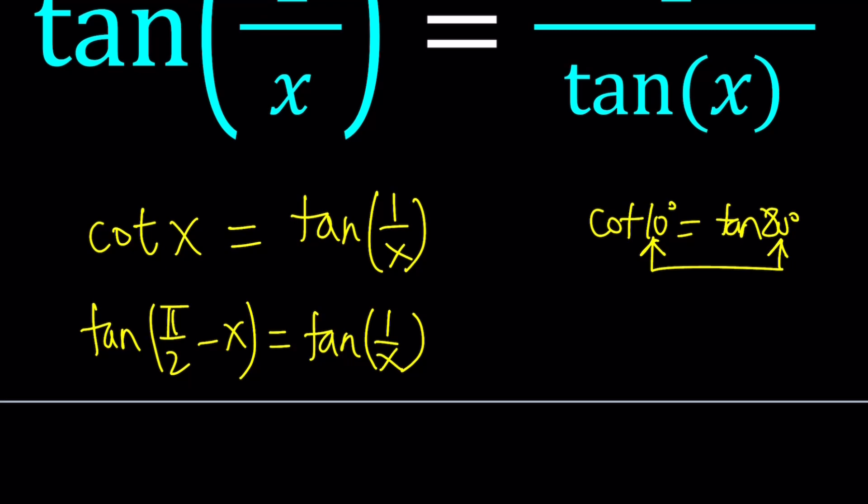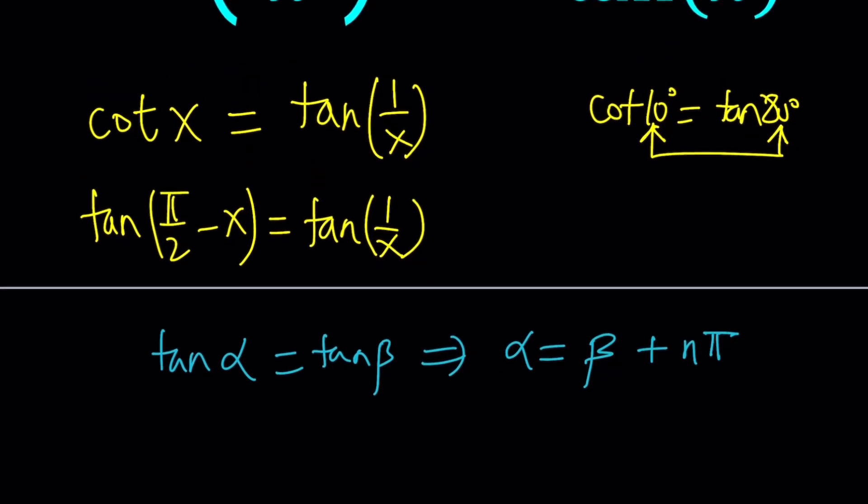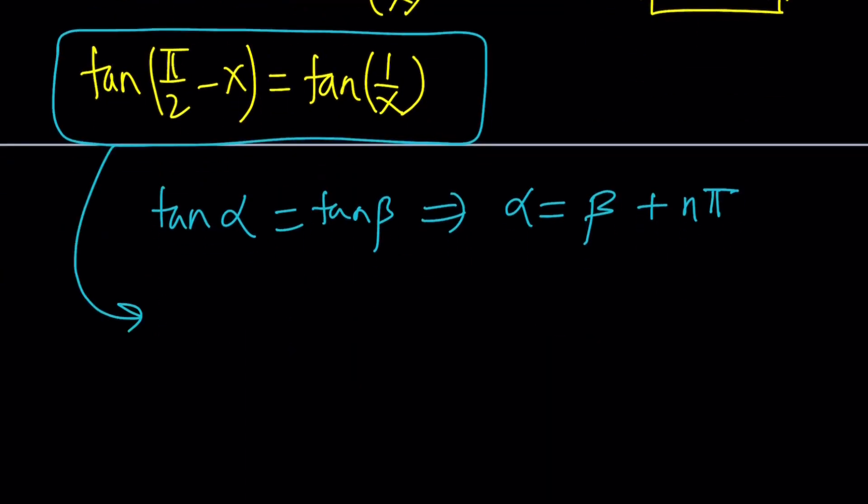How do you solve a tangent equation? If you have tangent alpha equals tangent beta, then this can be solved very easily by alpha equals beta, plus n times pi. Because the period for the tangent function is pi, so we just add multiples of pi to both sides. Let's get rid of the tangents and write this as pi over 2 minus x equals 1 over x plus n pi. n is an integer, by the way. It could be positive or negative.